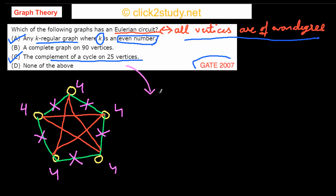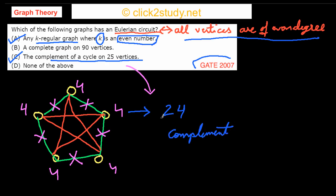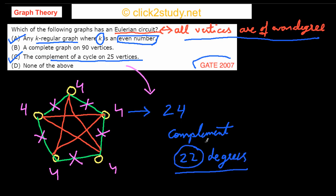For the complement of a cycle on 25 vertices, in the complete graph K25 each vertex has degree 24. When you find the complement by removing the cycle edges, you subtract 2, leaving all vertices with degree 22. Since 22 is even and all vertices have even degree, the complement of the 25-vertex cycle also has an Eulerian circuit.